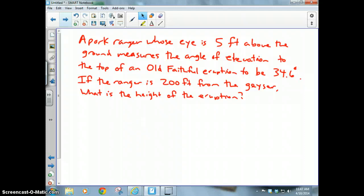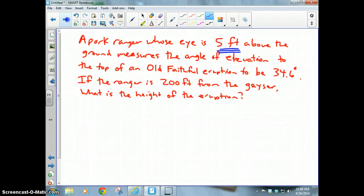Pause the video and write this one down. A park ranger whose eye is five feet above the ground measures the angle of elevation to the top of an Old Faithful eruption to be 34.6 degrees. The ranger is 200 feet from the geyser, so what is the height of the eruption? Well let's underline what's important. First of all, he's five feet above the ground, the angle of elevation is 34.6 degrees, and he's 200 feet from the geyser.